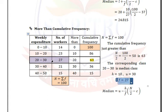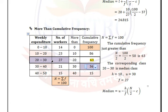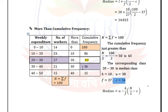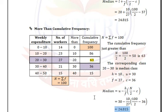In the more than form, C is the cumulative frequency of the succeeding class — that is, the next row after the median class. The next row's cumulative frequency is 36, so C = 36. Substitute all values into the formula and simplify; the answer is 24.815.